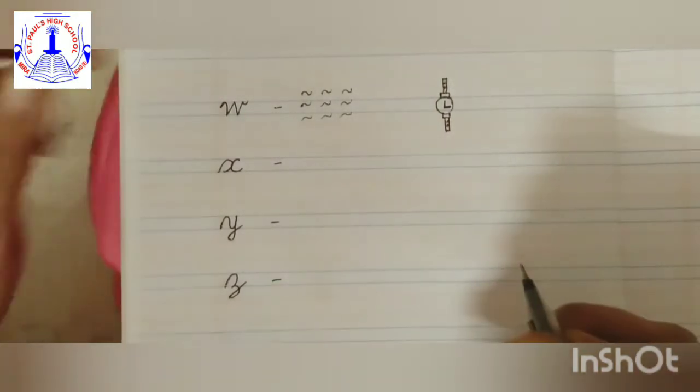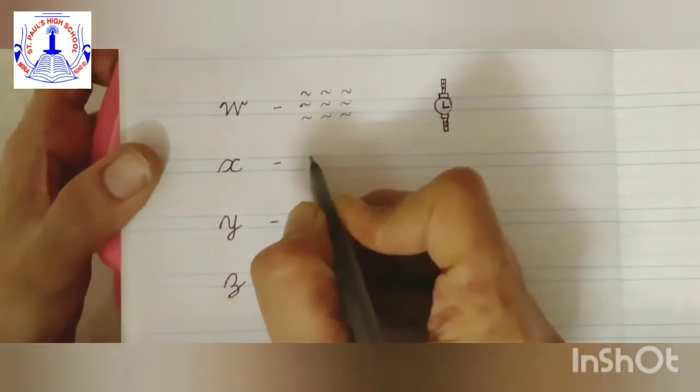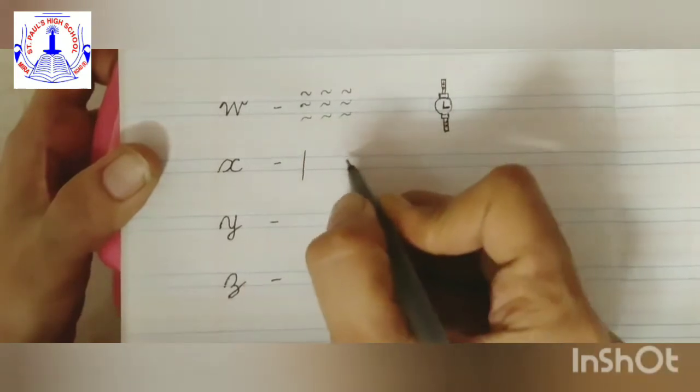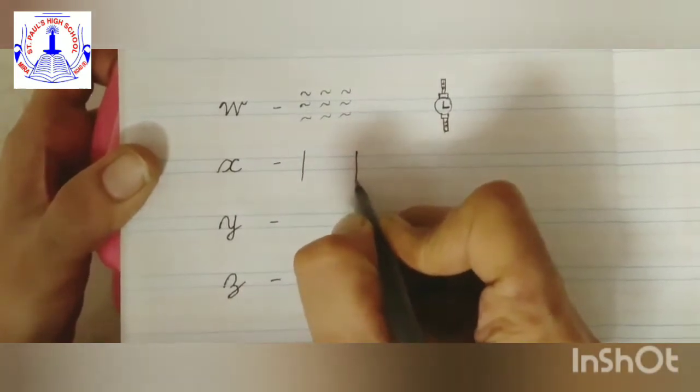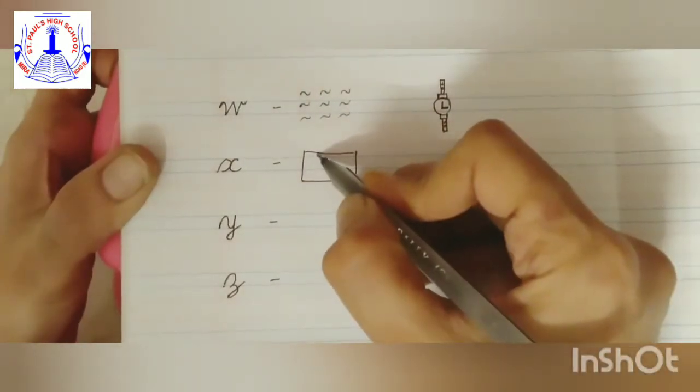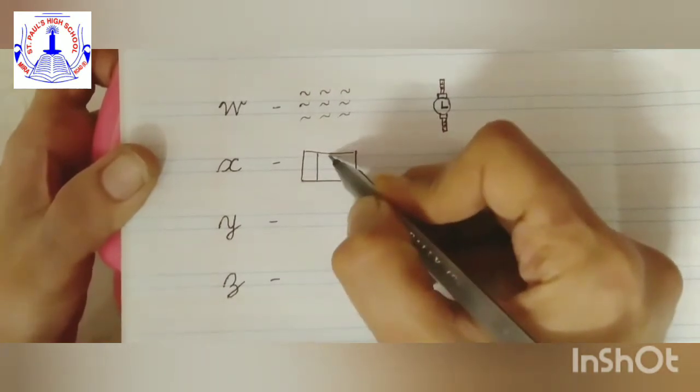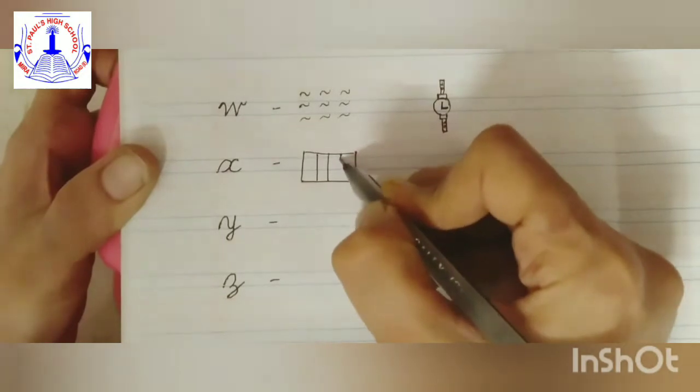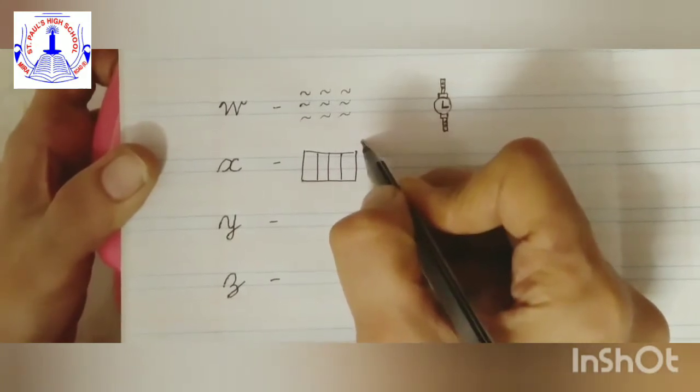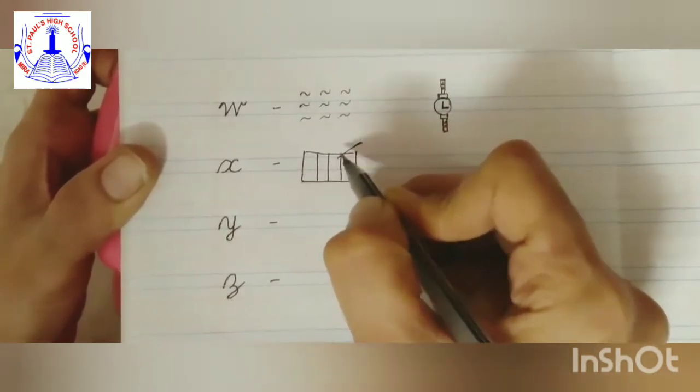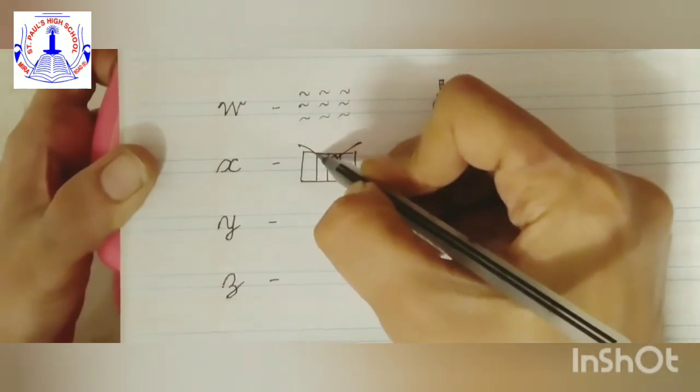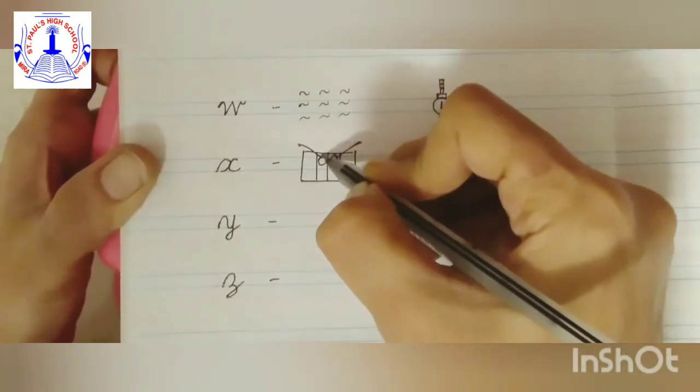Now let's draw X. X for Xylophone, so first draw two standing line and slipping line. Inside this draw a standing line, three standing line, that's it. Now make a stick of Xylophone, slanting line and one circle. Same way here, slanting line and one circle.